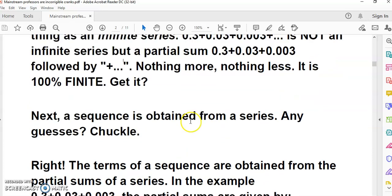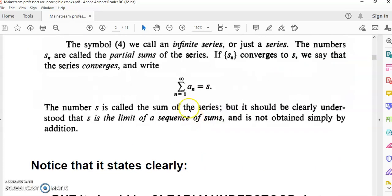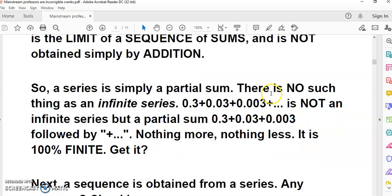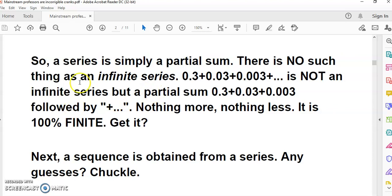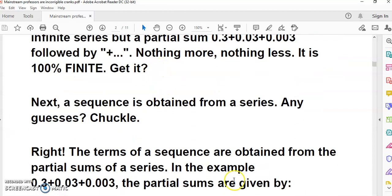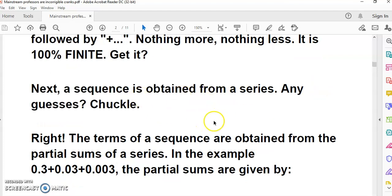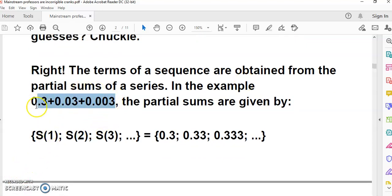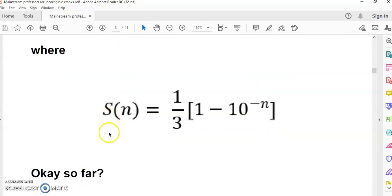Now the value 0.333... is considered to be equal to this infinite sum. In other words, you can't have 0.333... unless you interpret it as being an infinite sum. Next, a sequence is obtained from a series. How do we obtain the s_n's? If we have this series here, the s_n's are simply the sum of the terms. s_1 is 0.3, s_2 is the addition of these two which is 0.33, s_3 is addition of the first three, and so on. To find the terms of the sequence, we use this formula derived from a geometric series.